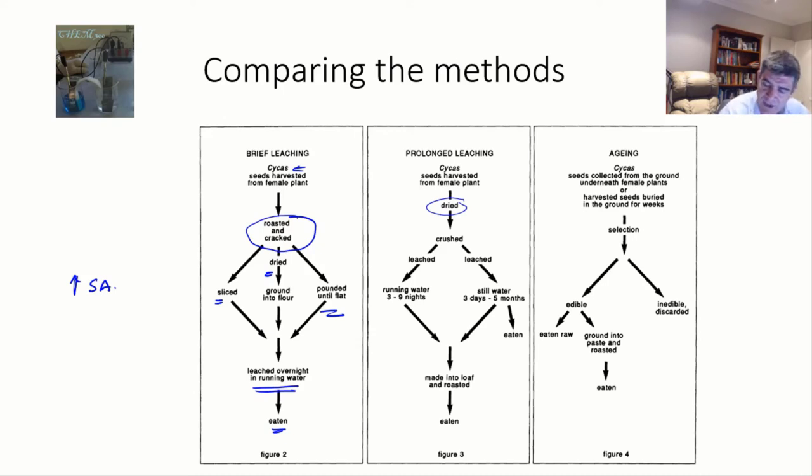The final one is the aging one. Now aging occurs more as a passive kind of process. It occurs where the seeds have been found, where they've been lying for some period of time. So that can be under the plants themselves or ones that have been actively buried for some period of time, which can then be dug back up again. And at some stage, they will be to the people edible.